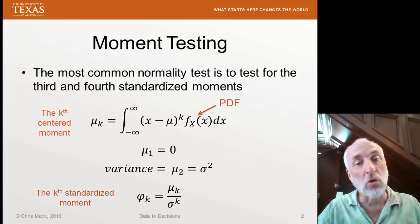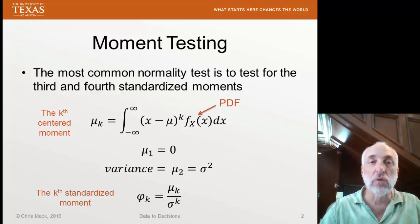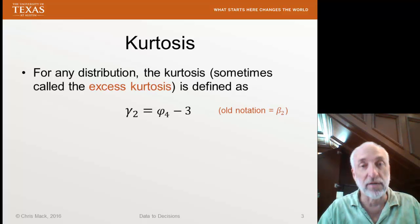Phi sub 3 was called skewness, and we looked at a test for skewness last time. Here we're going to look at kurtosis, which is the fourth standardized moment.